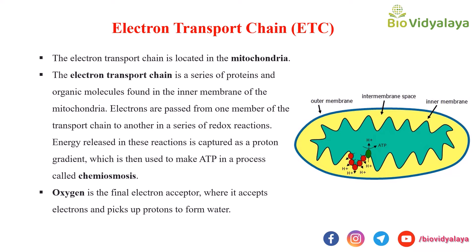Electron transport chain — from this word itself you can understand that it means a chain in which electrons are transporting. So where is this electron transport chain present? It is located in the mitochondria. We know that mitochondria is the powerhouse, and ATP is produced in the mitochondria. The structure of mitochondria has an outer membrane, an inner membrane, and the space between them is called the intermembrane space. The matrix is the innermost compartment.